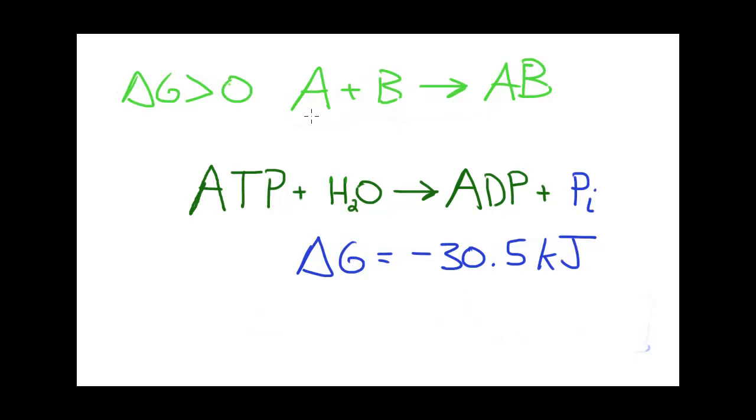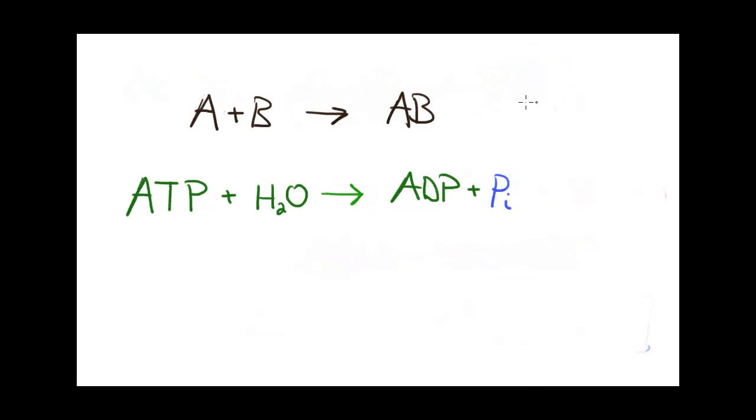So by coupling this unfavored reaction with the ATP hydrolysis, we can facilitate the actual favored formation of AB. I'm going to rewrite this and show you what I mean by actually coupling these reactions by adding these together and how that affects the overall delta G. Imagine that the actual free energy change for this reaction was plus 15 kilojoules, the unfavored process.